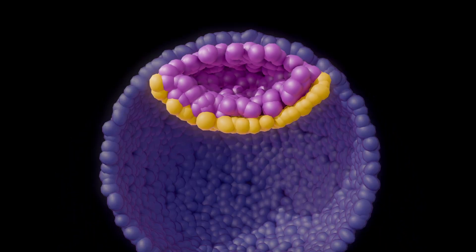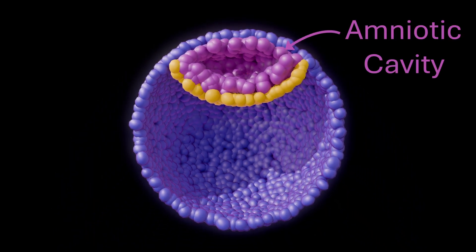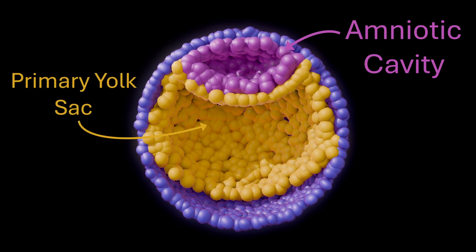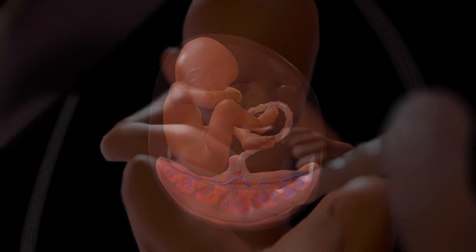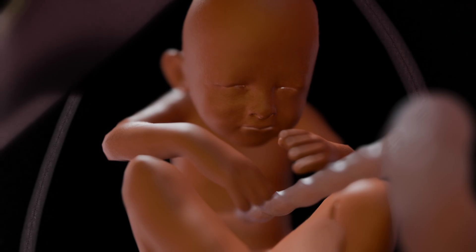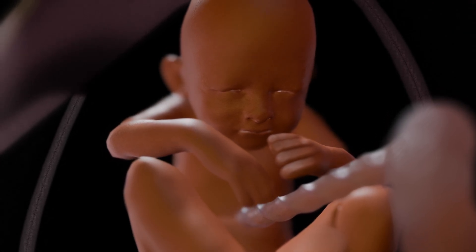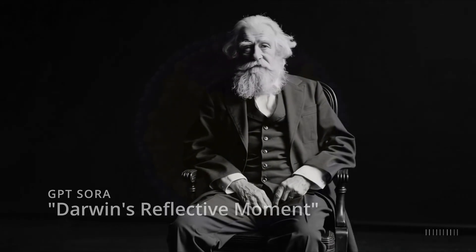From there, two spaces take shape: an amniotic cavity forming over the epiblast, and beneath the hypoblast, the primary yolk sac. We talked in our last video about the many functions of the amniotic cavity and amniotic fluid, so if you want a refresher, I'd suggest you go check that video out. Though it's only temporary, the yolk sac also plays a key role in those first days of nourishment, and it's a little throwback to our evolutionary past.